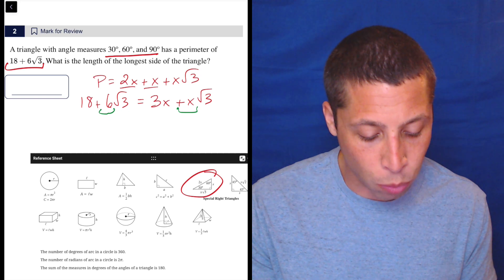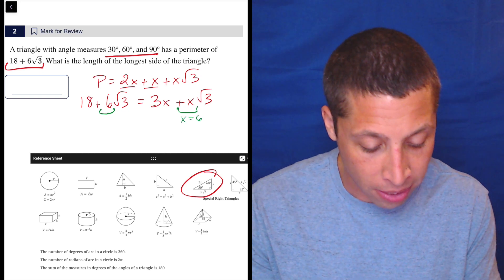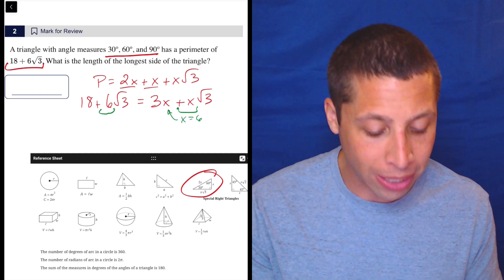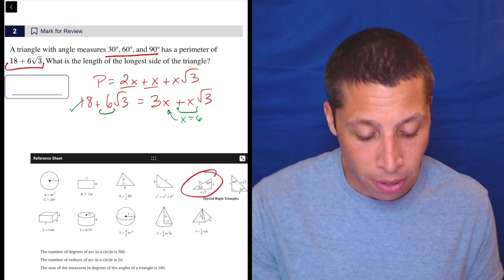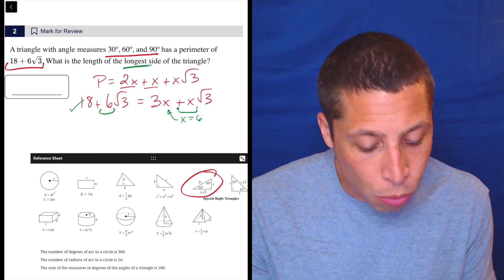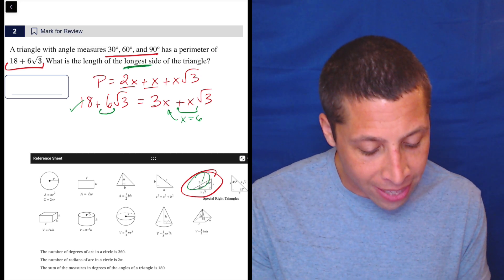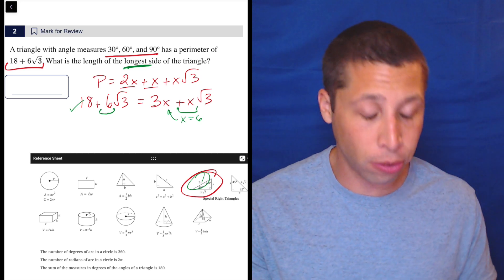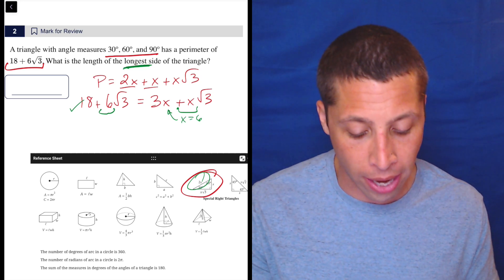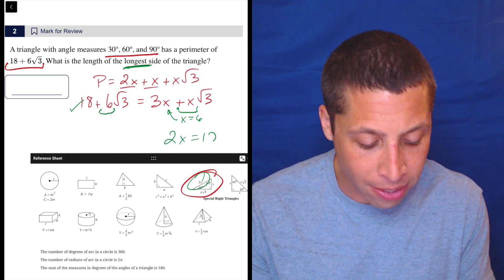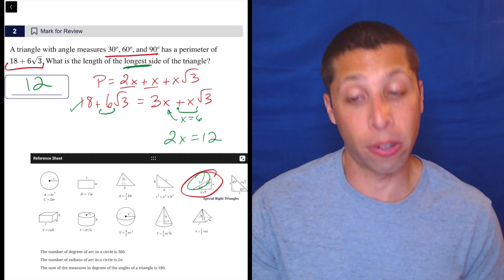And then if 6 were x, so x equals 6, let's pop that in here. That would mean 3 times 6 is 18. Check. So it all works out. So what do they want though? Let's be really careful. They want the longest side. So that's the 2x side because the hypotenuse of a right triangle is always the longest side. So 2x is 12. That is our answer.